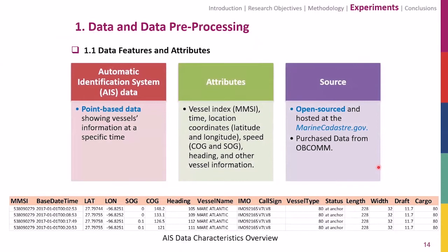In the experiment section, I will talk about the data, the comparison results for validation, evaluations, and two case studies using a larger dataset. The AIS data is point-based data showing vessel information at a specific time. Attributes include vessel index, location coordinates, speed, heading, and other vessel information.